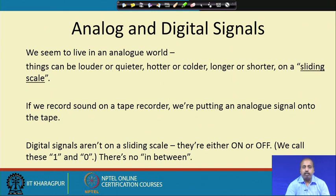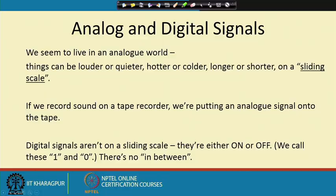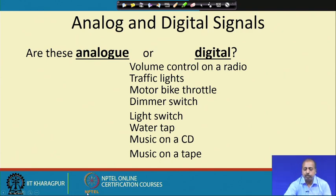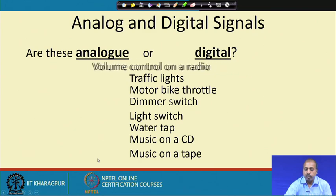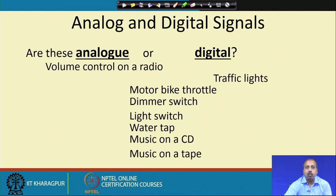Digital signals are not on a sliding scale — they are either on or off, like light switches: either the switch is on or the switch is off. There is nothing like 'light is turned half on.' The volume control on a radio is an analog signal. Traffic lights are digital — they are either on or off: green, red, and yellow. A motorbike throttle controlling fuel injection is analog, because as you turn the accelerator it puts in more and more fuel.